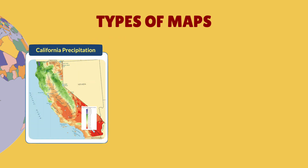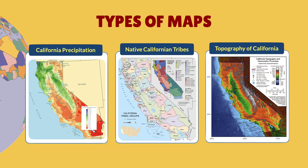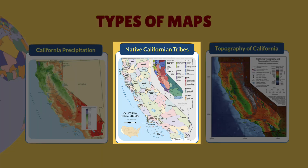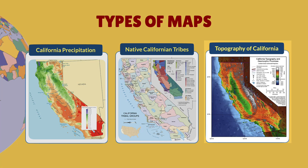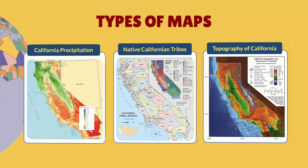Different maps can show the same place but with different types of information. For example, these three maps are all maps of California, but they show different things: rain and snowfall, the homes of native Californians, and mountains, hills, and valleys.